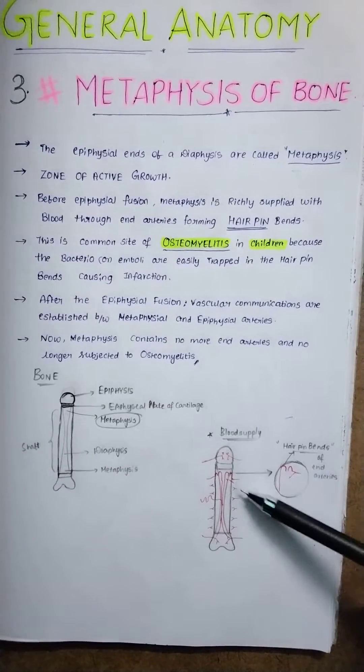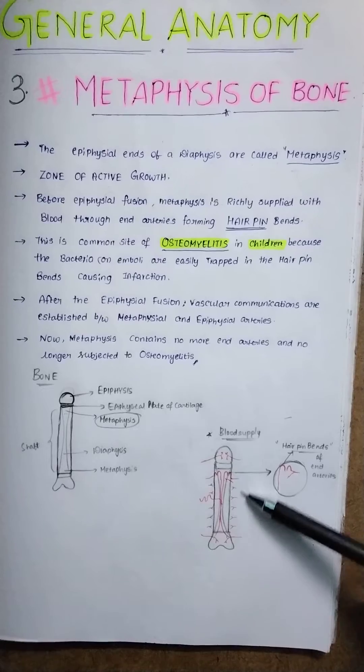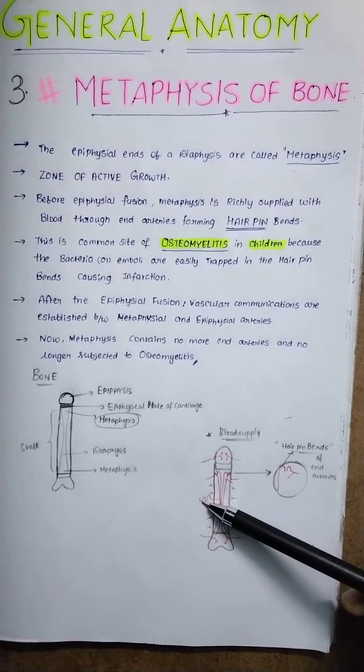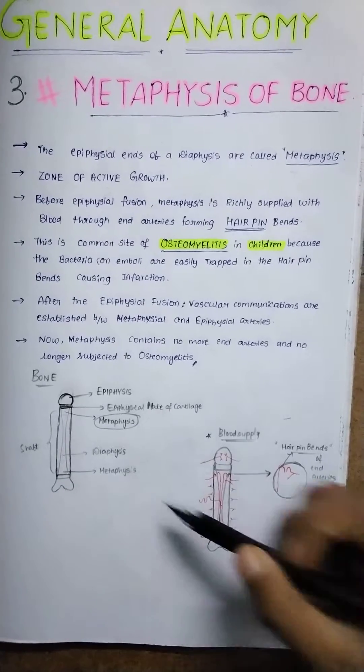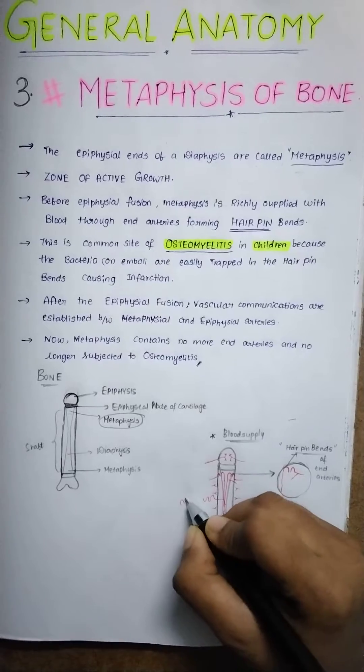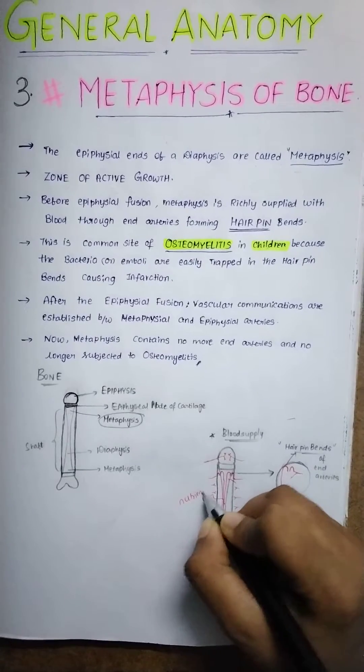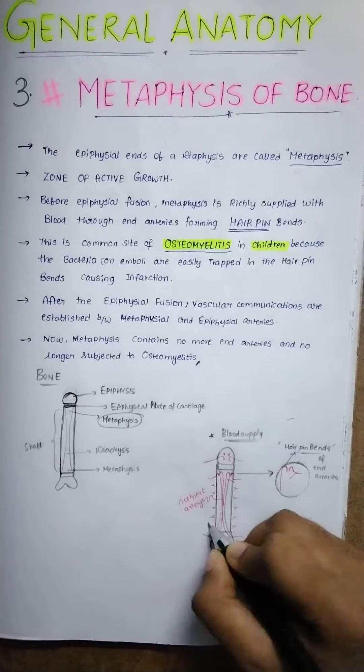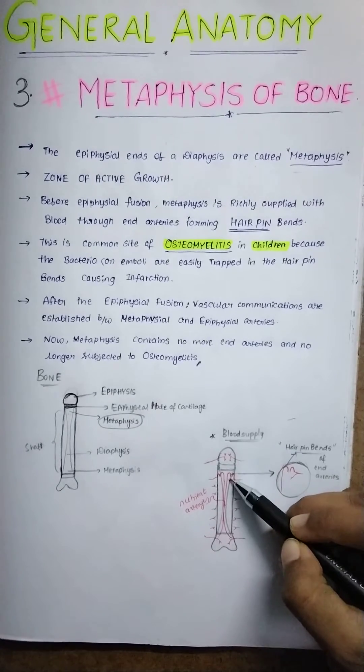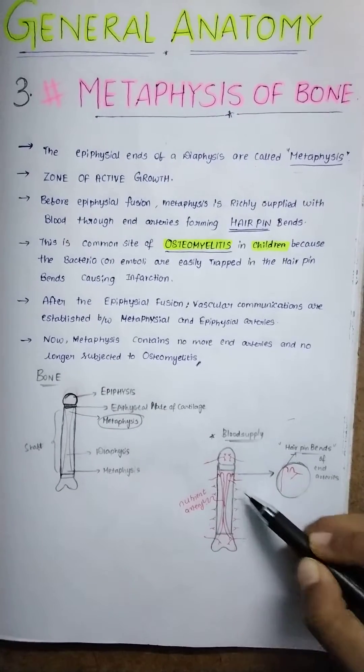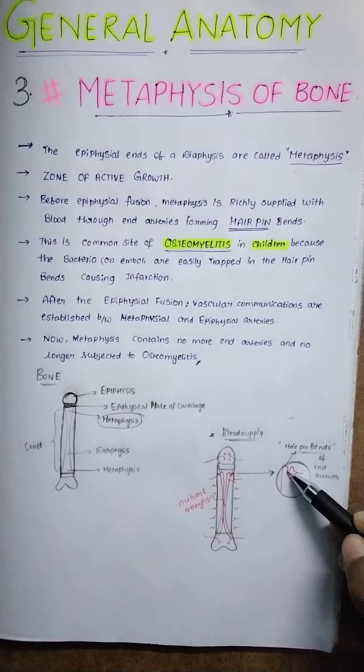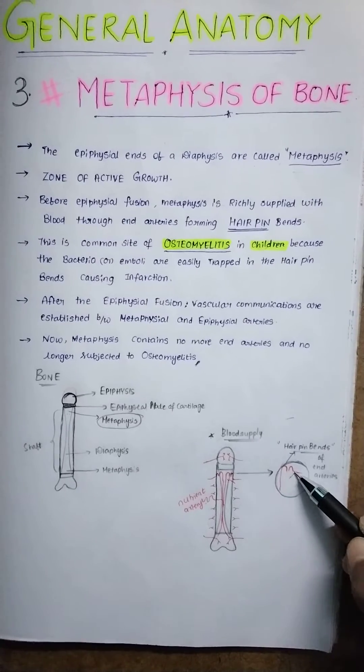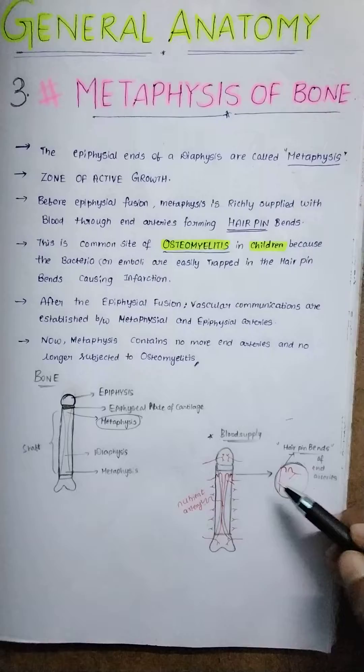These are the epiphysial arteries, and these are the periosteal arteries supplying the bone. This is the one which is called the nutrient artery. And here, these are the hairpin bends. I've shown here for a better view these are the hairpin bends of the end arteries.